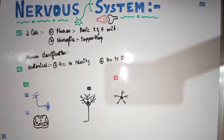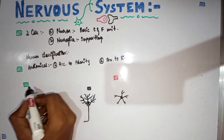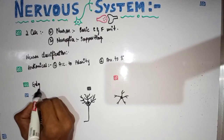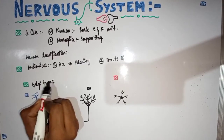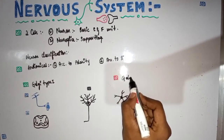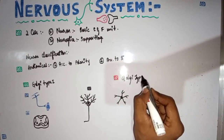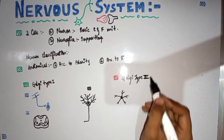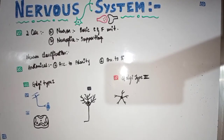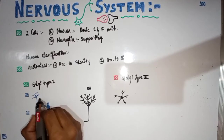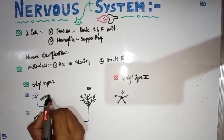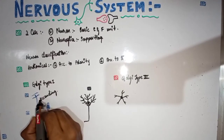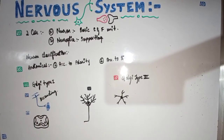Now I will discuss the second anatomical classification of neurons: according to size. Neurons are classified into Golgi type 1 and Golgi type 2 cells. In Golgi type 1, cells may be as long as one meter — for example, axons in descending pathways from the cerebral cortex.